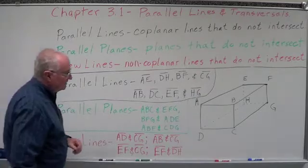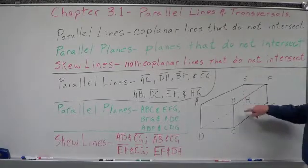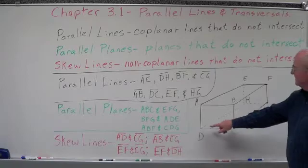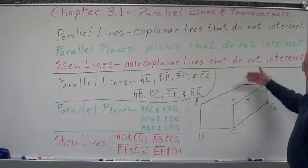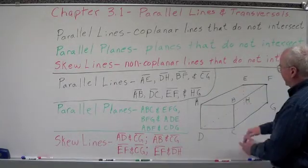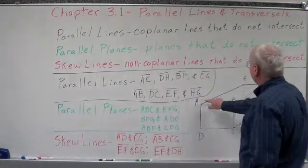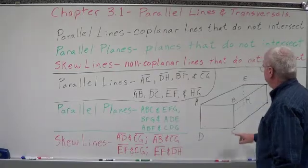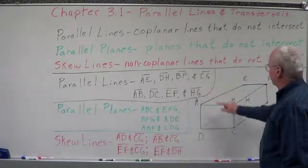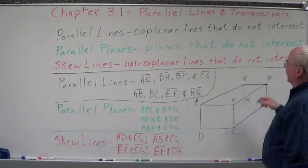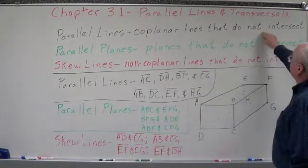Now some examples using a three-dimensional box. We have ABCD as the front and EFGH as the back; dotted lines show hidden lines. For parallel lines: line AE is parallel to DH, parallel to BF, and parallel to CG. All those lines are parallel — they can be in the same plane and do not intersect. We can draw a diagonal plane through them to confirm they're coplanar.